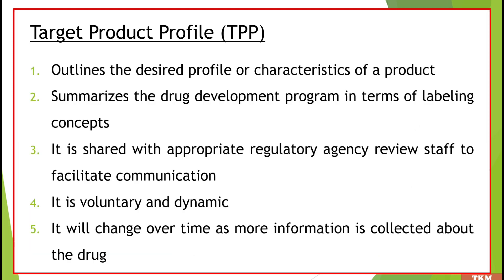To summarize: TPP outlines the desired profile or characteristics of a product and summarizes the drug development program in terms of labeling concept — what do you ultimately want to see in your drug label? It is also a useful document because it is shared with appropriate FDA staff and other regulatory agency staff, and it facilitates communication between the pharmaceutical industry and regulatory staff, as well as amongst people working within the pharmaceutical industry.